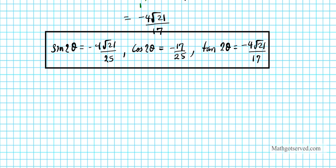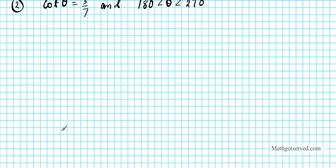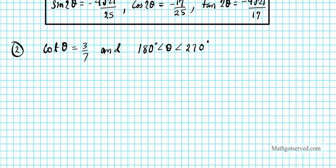Let's go ahead and try question number 2. In question 2 we have a different set of circumstances. We have cotangent theta equals 3 over 7, and 180 degrees is less than theta and theta is less than 270 degrees. We want to find sine 2θ, cosine 2θ, and tan 2θ.